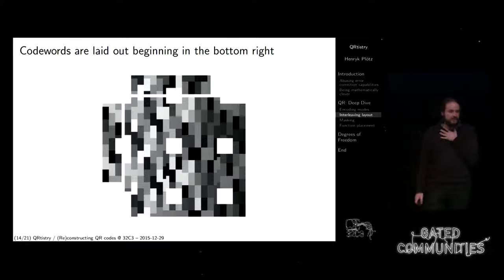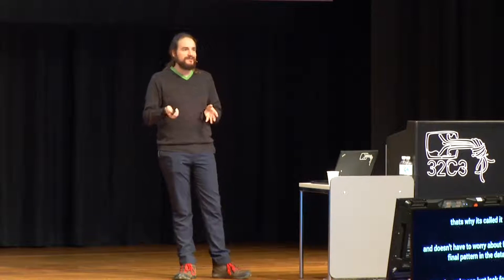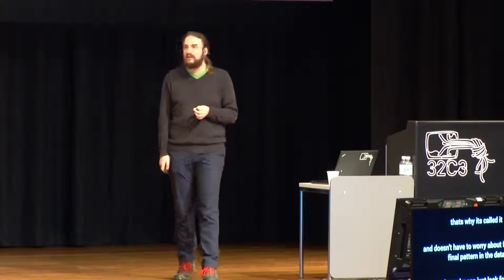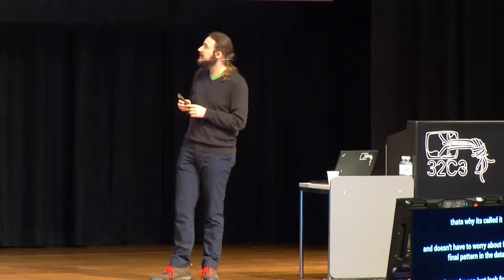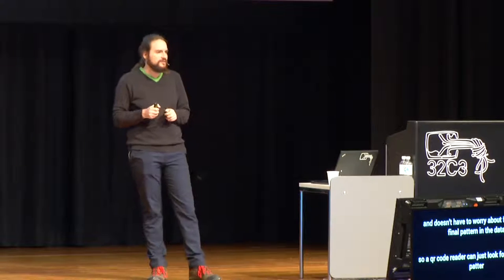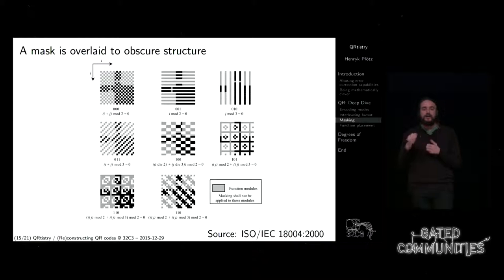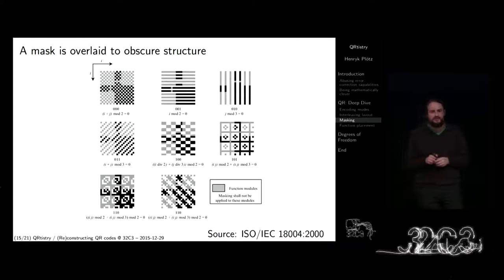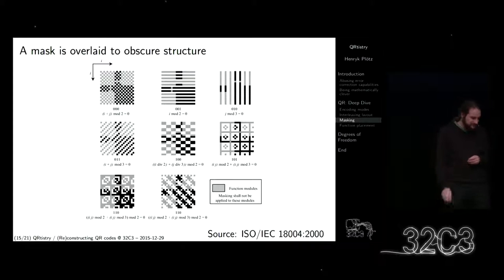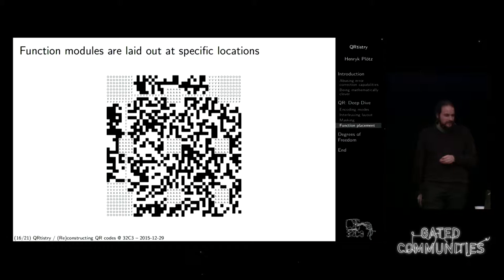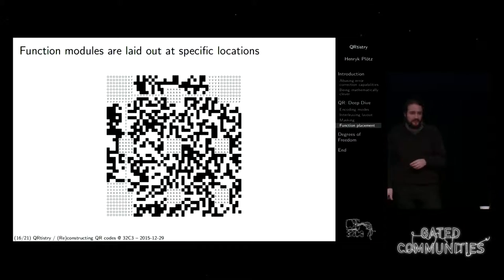Was die meisten Leute nicht wissen: es gibt auch eine Maskierung, sodass ein QR-Code-Reader die Findermuster und Ausrichtmuster findet. Selbst wenn man ein Muster enkodiert, was aussieht wie ein Findermuster, würde man das nicht so sehen. Denn es gibt sieben verschiedene Masken, die per XOR drübergelegt werden und die Pixel invertieren. Wenn man alle sieben nacheinander drüber legt — was die Spezifikation sagt — probiert man alle sieben aus und nimmt den, der das beste Resultat gibt.